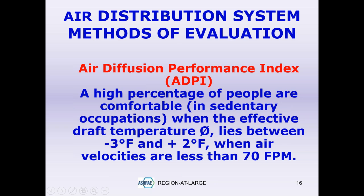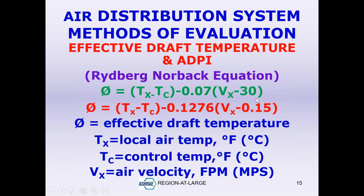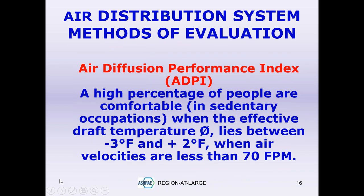For a heating situation, the formula changes slightly. Refer to the ASHRAE Applications Manual 2019, Chapter 58. In a heating situation with British units, the EDT should lie between −4 and +3.6; in SI units, between −2.2 and +2 degrees Celsius for people to be generally comfortable.